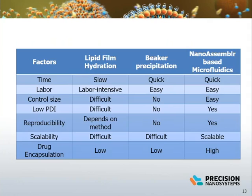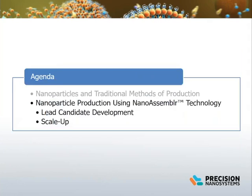The NanoAssembler microfluidic approach is a bottom-up self-assembly method, and there are many advantages compared to the traditional top-down approach. Namely, the microfluidics provides a controllable, reproducible, and scalable process which saves time in nanoparticle development.